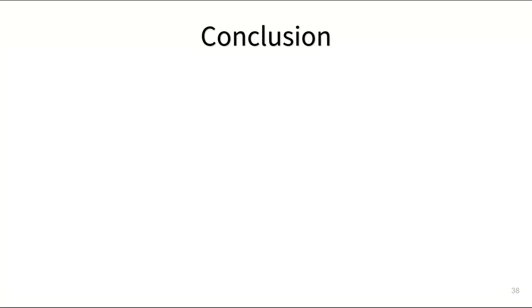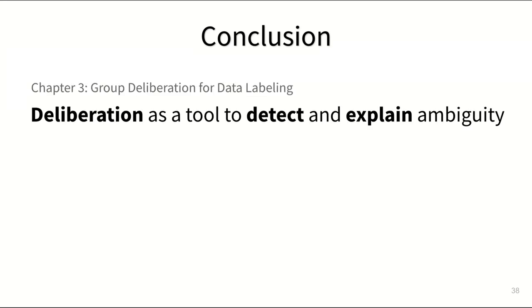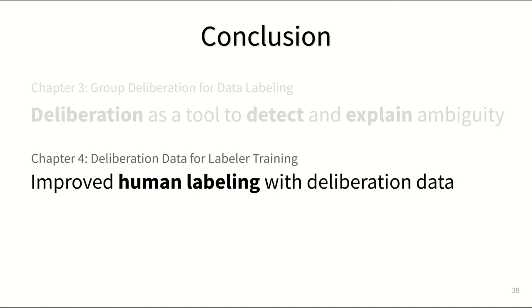In summary, my PhD research looked at the problem of handling ambiguity in human-AI interaction and my core contribution has been to introduce group deliberation into data labeling as a tool to detect and explain ambiguity. We've shown how the resulting deliberation data can be used in different ways.